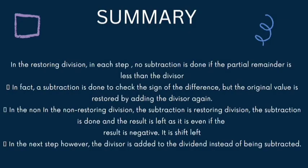In summary, in restoring division, in each step no subtraction is done if the partial remainder is less than the divisor. The subtraction is done to check the sign of the difference, but the original value is restored by adding the divisor again. In non-restoring division, the subtraction is done and the result is left as it is even if the result is negative and is shifted left. In the next step, however, the divisor is added to the dividend instead of being subtracted.